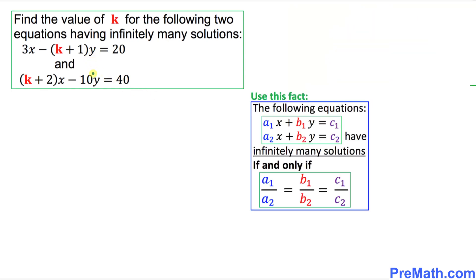Before we take care of our problem, let's look at this very crucial fact. It states that if you have two linear equations and they have infinitely many solutions, then the ratio of the coefficients of the x variable equals the ratio of the coefficients of y, which equals the ratio of the constants on the right-hand side.